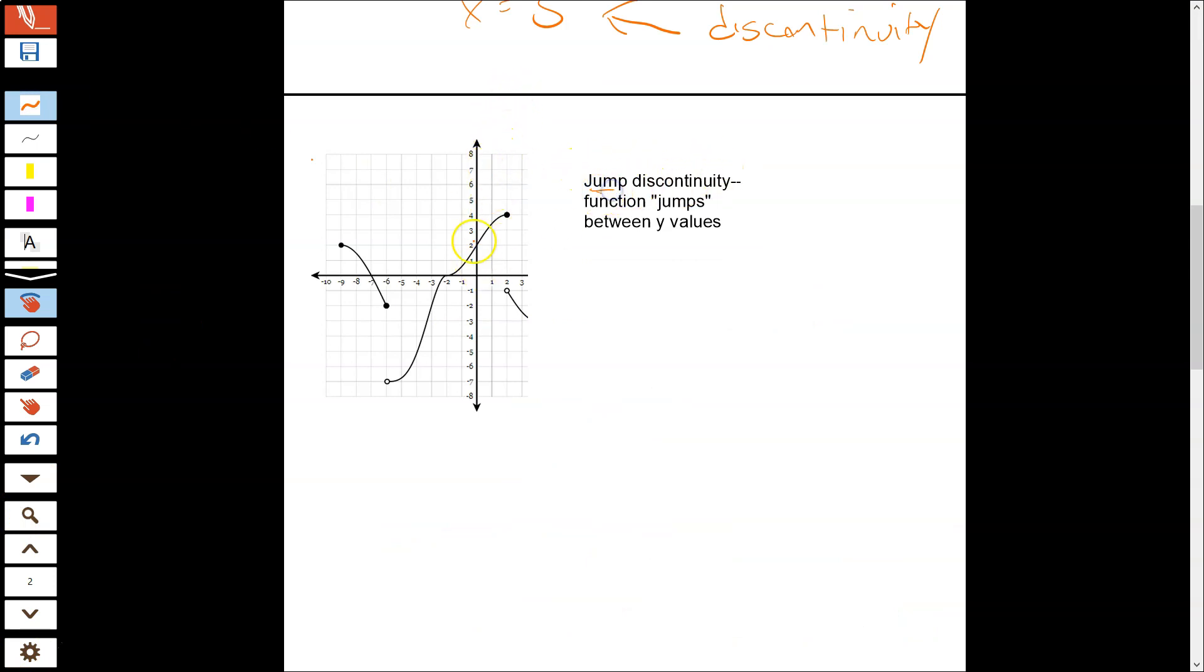It's called a jump discontinuity. And that's exactly what it sounds like. So at x equals negative 6, I jump from negative 2 to negative 7 on the y-axis. So we'd say this is a jump discontinuity at x equals negative 6. We name these using our x values, by the way. And also again at x equals 2. So that's a jump discontinuity. If I'm asking you for a jump discontinuity, you'd look for those gaps.